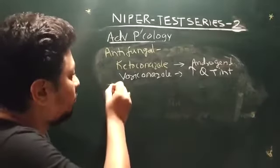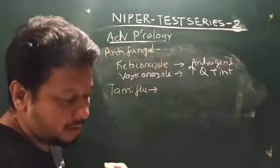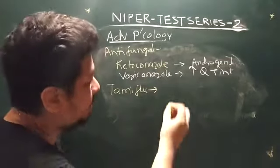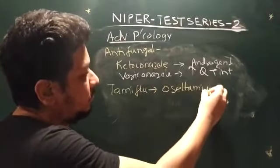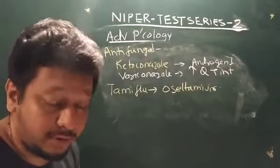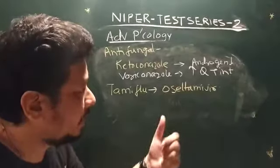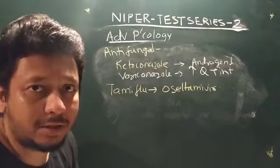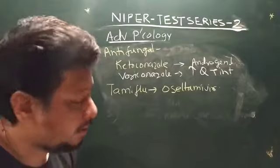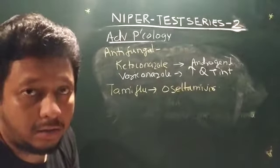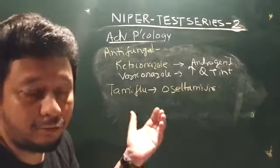Brand names are also important — for example, Tamiflu, whose generic name is oseltamivir, is an antiviral agent. Notably, the influenza virus is developing resistance to oseltamivir therapy, so you should also know the newer drugs available to counteract the flu virus.